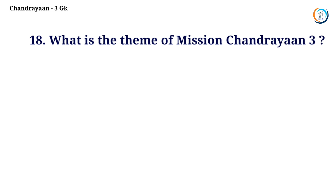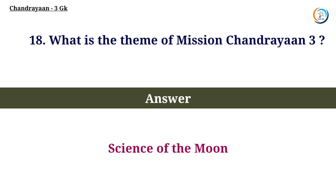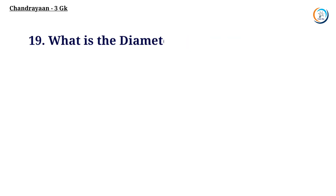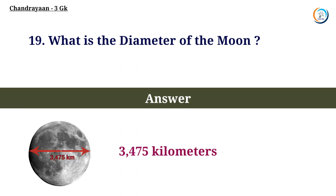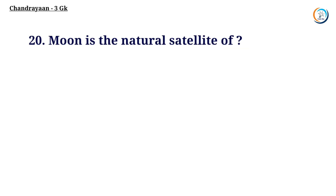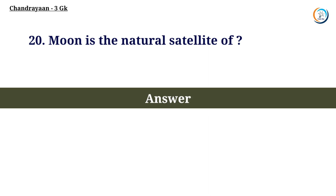What is the theme of mission Chandrayaan-3? Answer: Science of the moon. What is the diameter of the moon? Answer: 3,475 km. The moon is the natural satellite of the Earth.